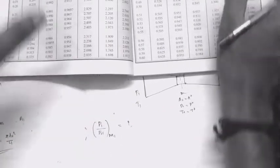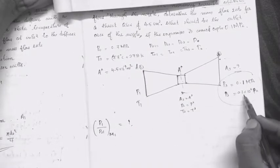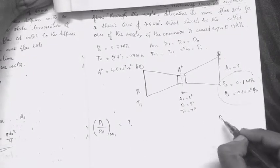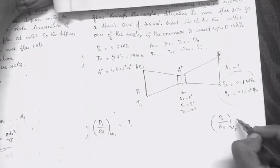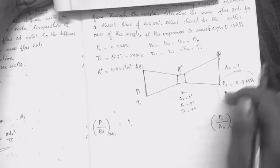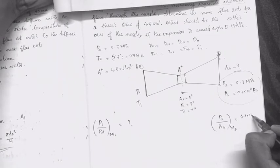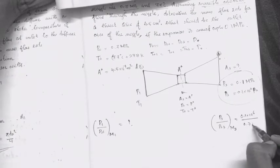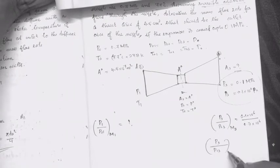For the exit, we calculate P3 by P03. Since P3 is 0.1 MPa and P03 is 0.7 MPa, we compute P3 divided by P03, which gives us 0.143. From the isentropic flow table, at P/P0 equal to 0.143, we can find the exit Mach number M3.